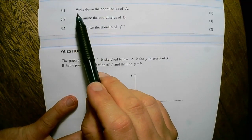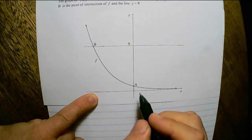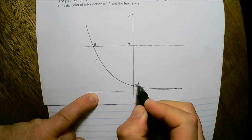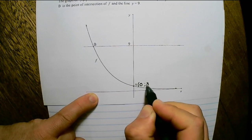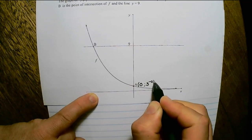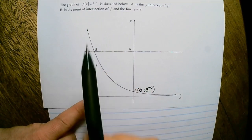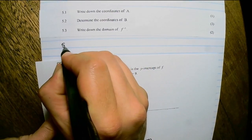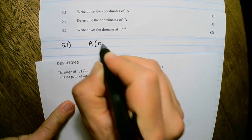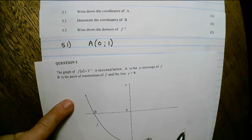The first question reads: write down the coordinates of A. At A, the x value would be 0 and the y value would be 3 to the power of negative 0, because y is represented by 3 to the power of negative x. Therefore, the coordinate of A is (0, 1) because 3 to the power of negative 0 is equal to 1.